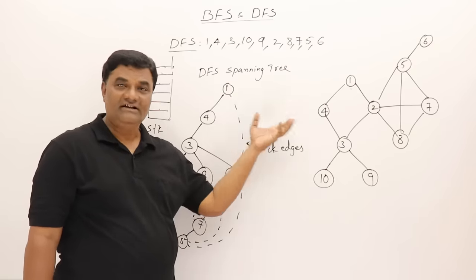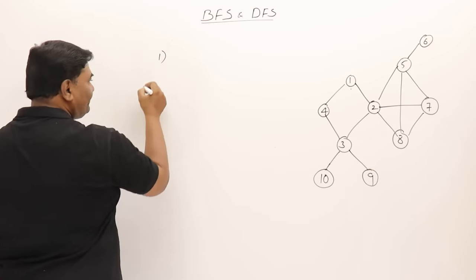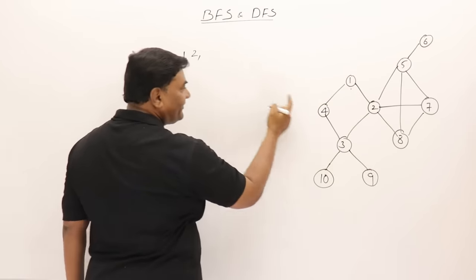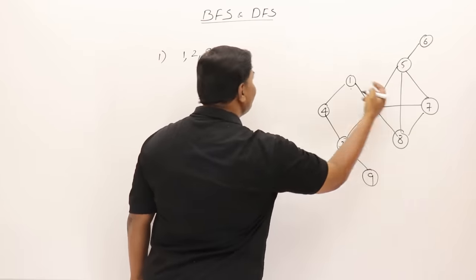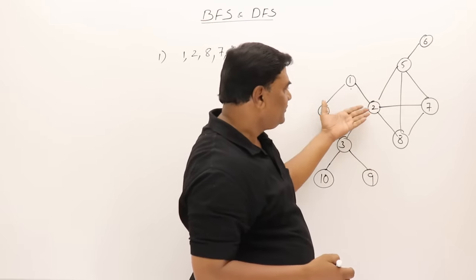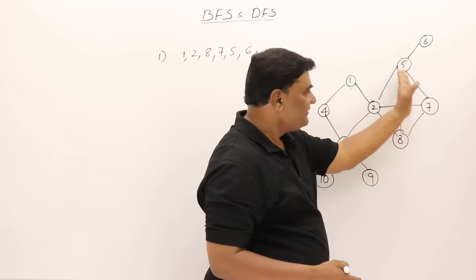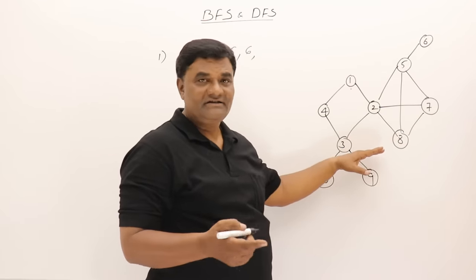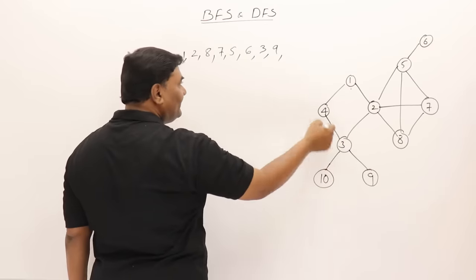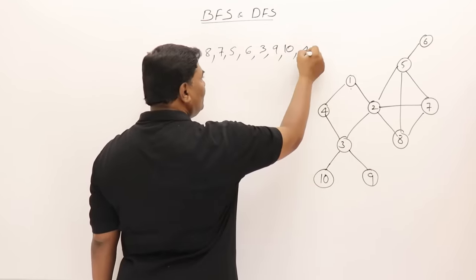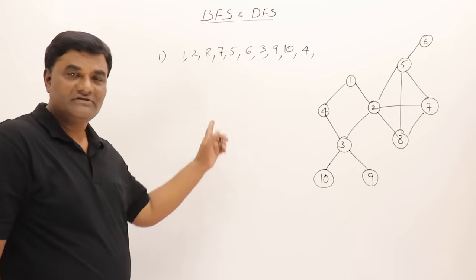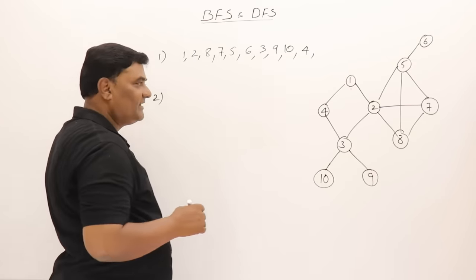I'll write a few more valid DFS traversals directly from the graph. Start from vertex 1, go to 2, then 8, then 7, then 5, then 6 — nothing from 6, come back to 5. Two and 7 are already completed so come back to 7, back to 8, back to 2. From 2 go to 3, then 9, come back, go to 10, back to 3, then go to 4. One is already explored so return to 4, then 3, then 2, then 1. Finished.